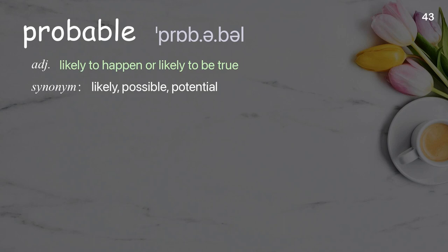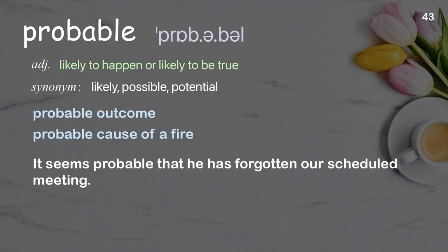Probable: likely to happen or likely to be true. Examples: probable outcome, probable cause of a fire. It seems probable that he has forgotten our scheduled meeting.